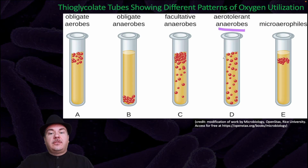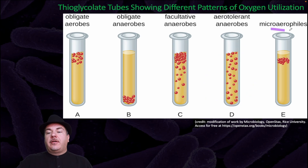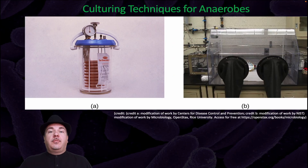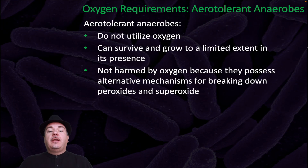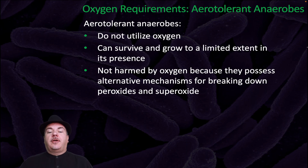Aerotolerant anaerobes do not use oxygen for cellular respiration but can handle living in its presence, so they grow uniformly throughout the tube. Microaerophiles require a small amount of oxygen but not the high concentration present in the atmosphere. When working in a microbiology lab with anaerobic organisms, we must culture them in special containers or canisters with no oxygen. Aerotolerant anaerobes survive and grow to a limited extent in oxygen's presence because they possess alternative mechanisms for breaking down peroxides and superoxides.